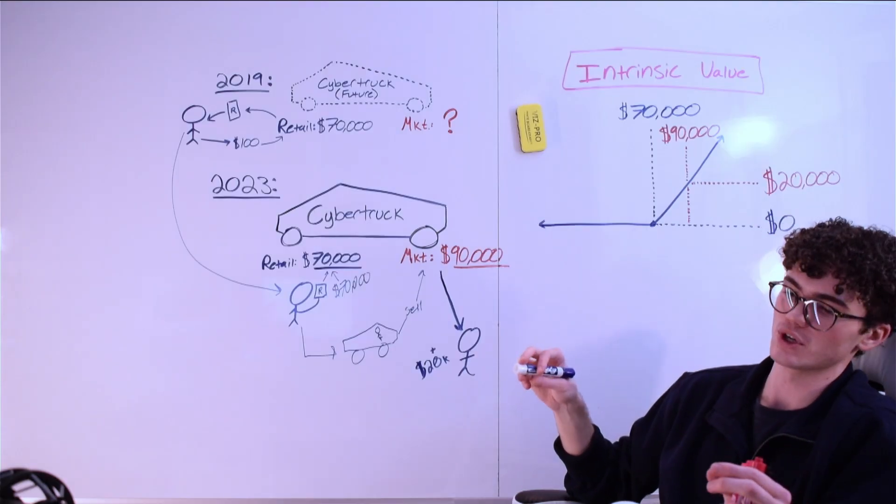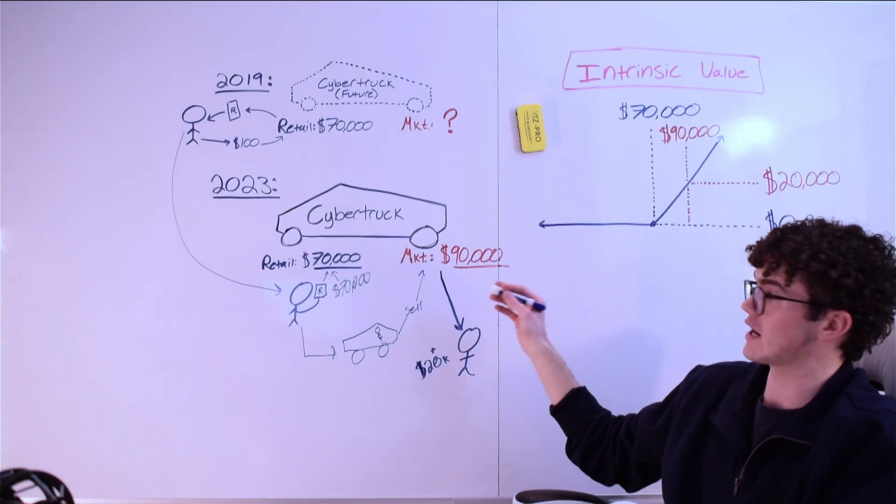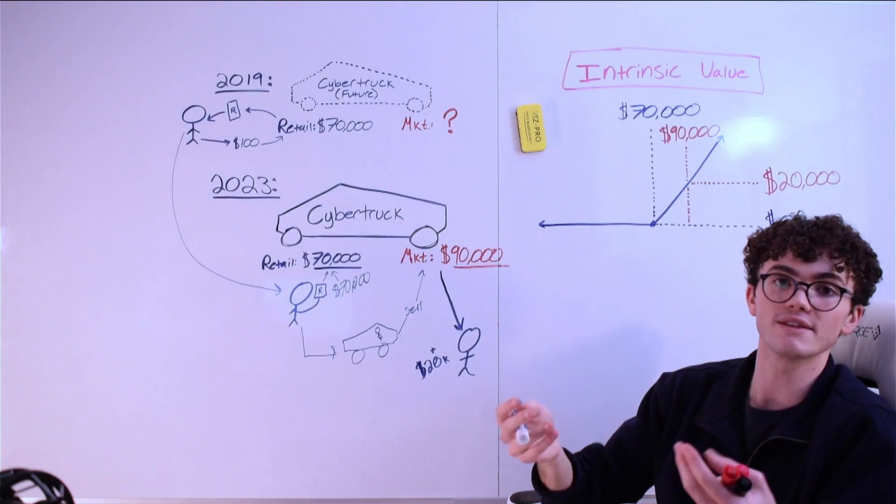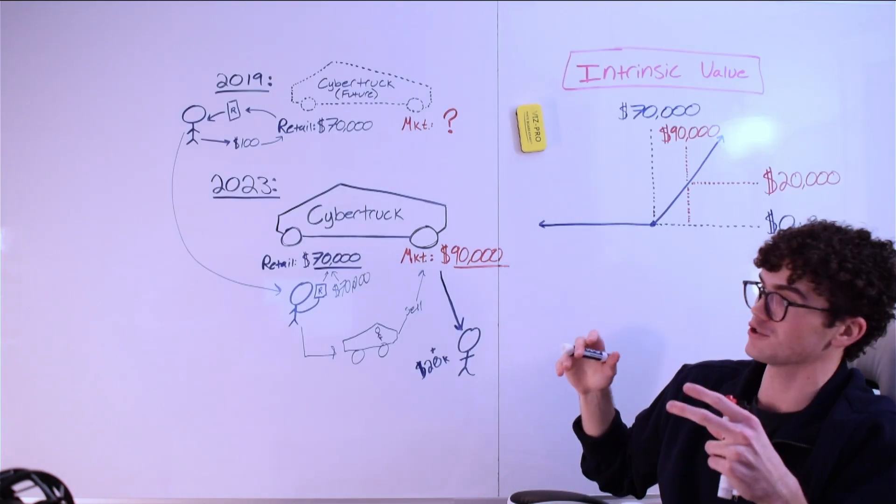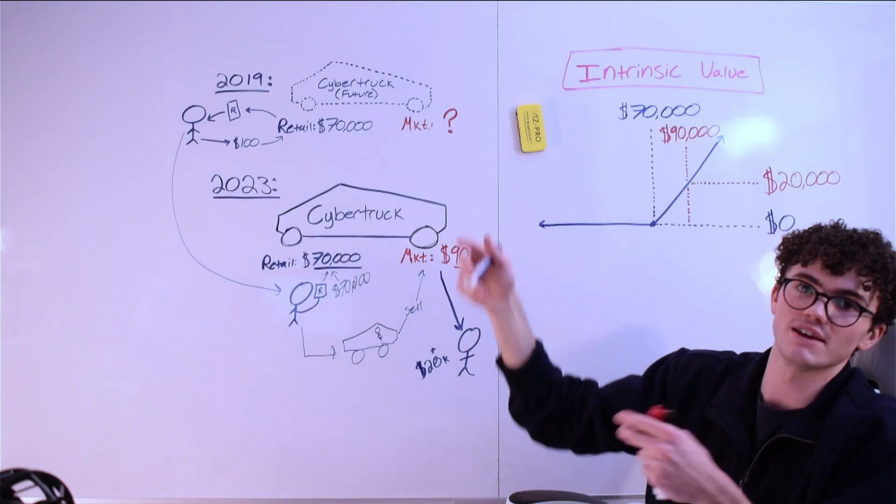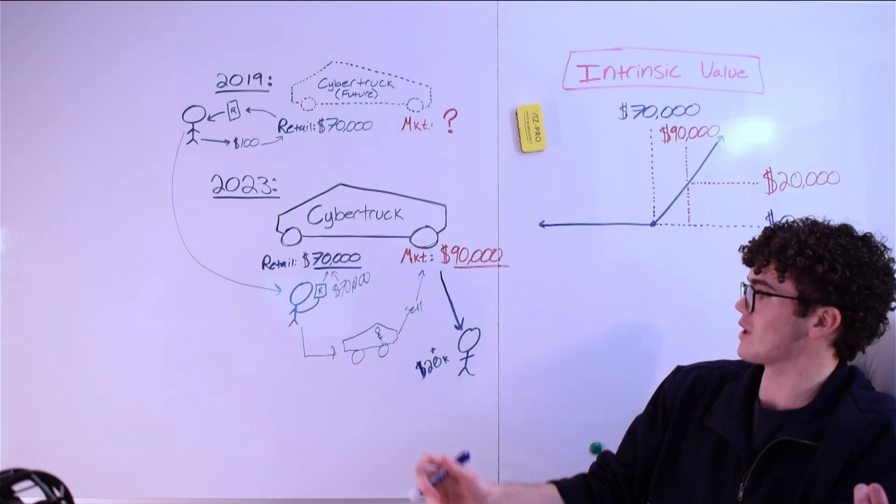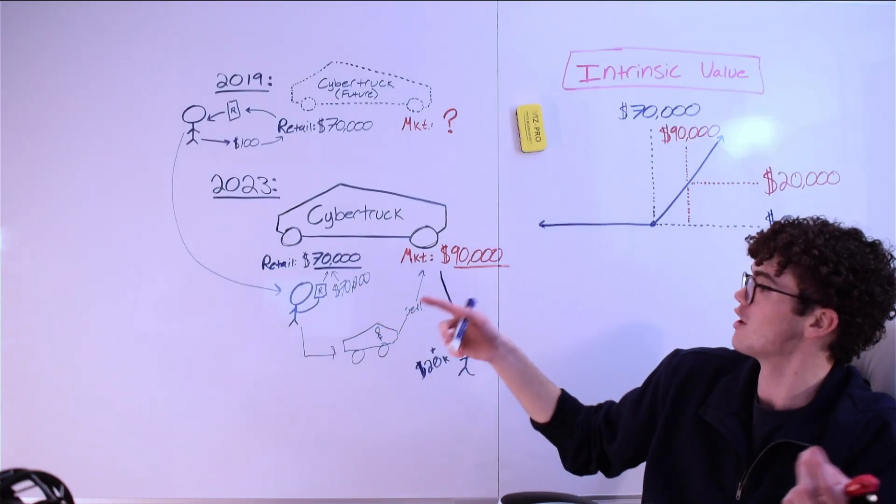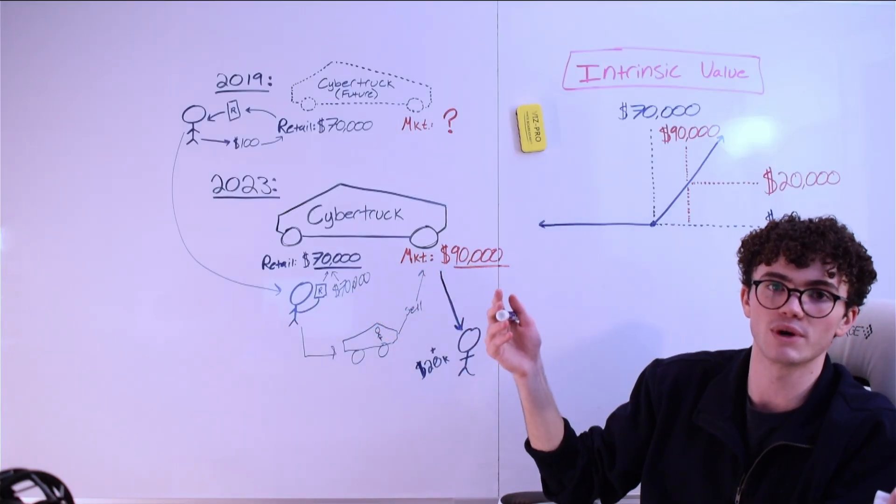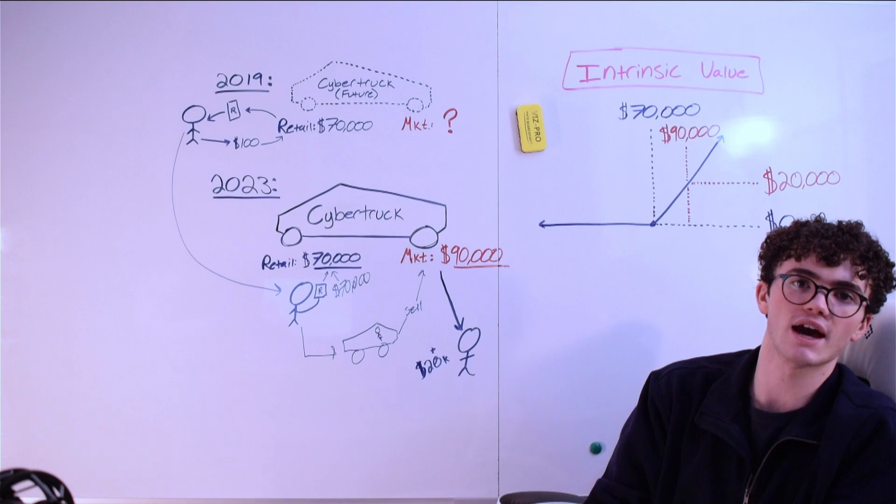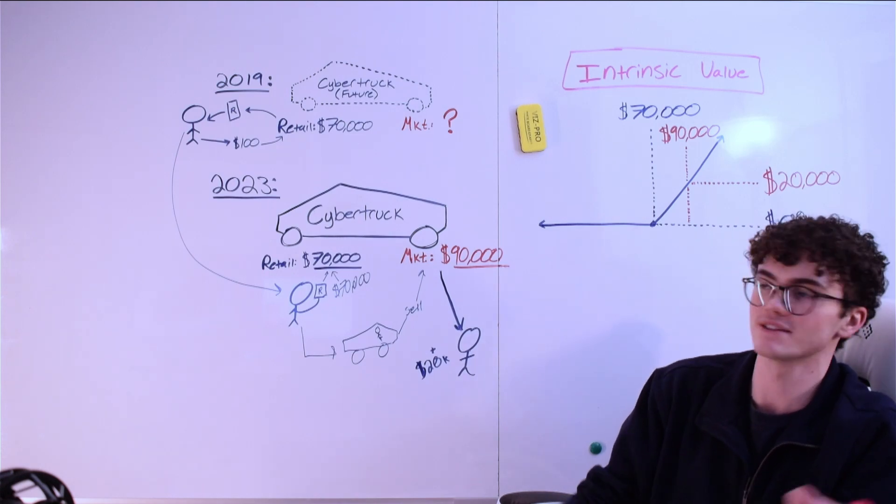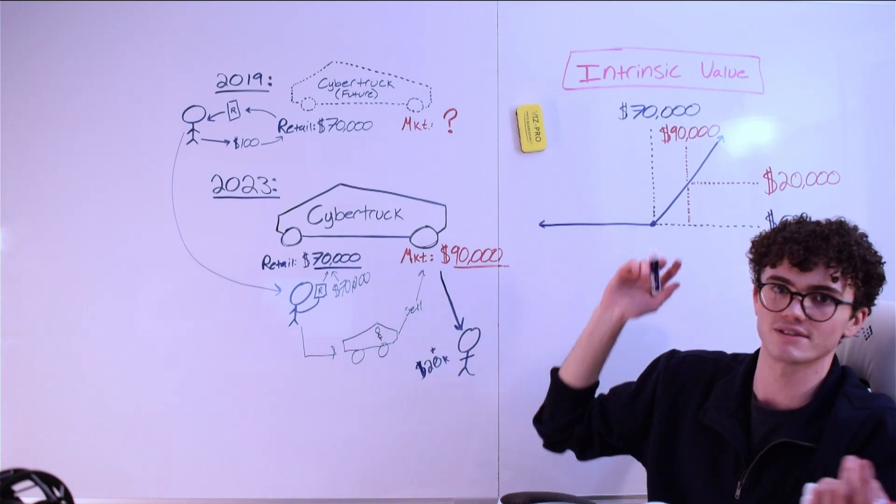If you're the guy without the reservation in this situation, you have two choices. You either buy the car for $90,000 or you buy this piece of paper from somebody else, this reservation, and then go pay $70,000 for the same car. So if I'm that guy who wants the car and has no reservation, and I'm perfectly rational, I'm willing to buy this piece of paper for any amount of money less than $20,000. I'll buy it for $19,999.99 and save myself one cent buying this $90,000 car.